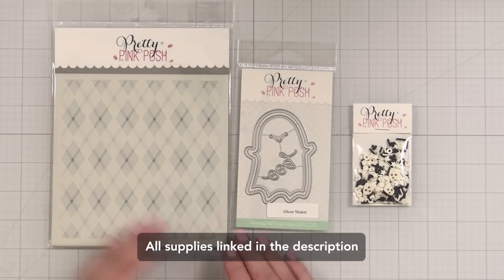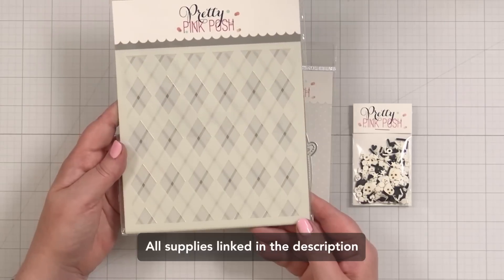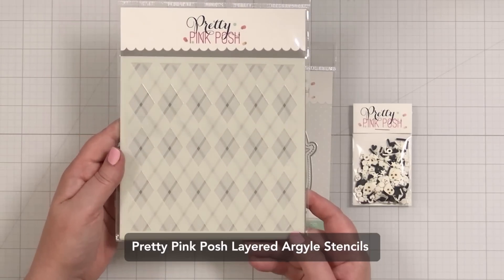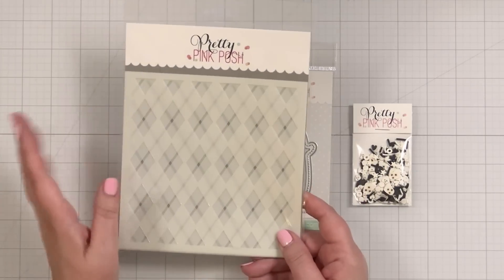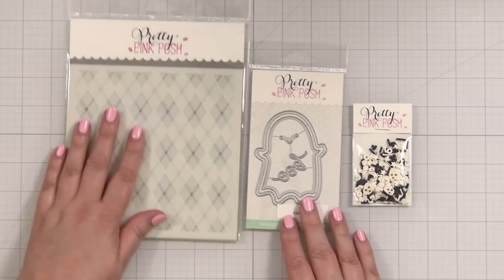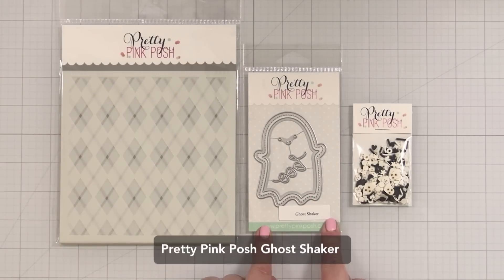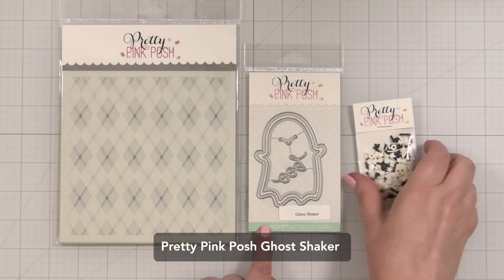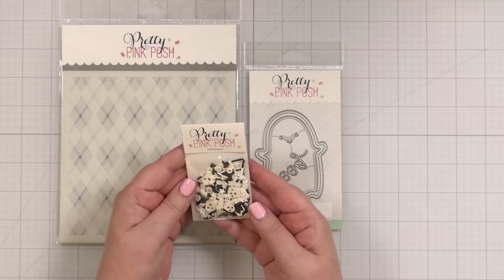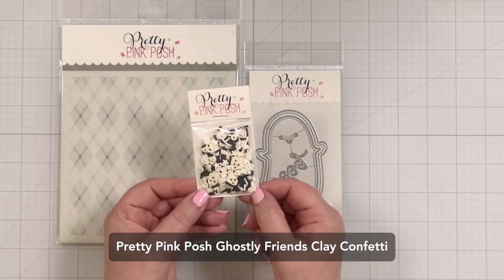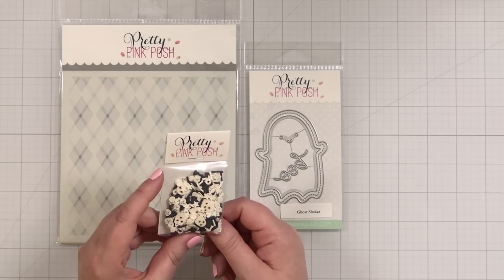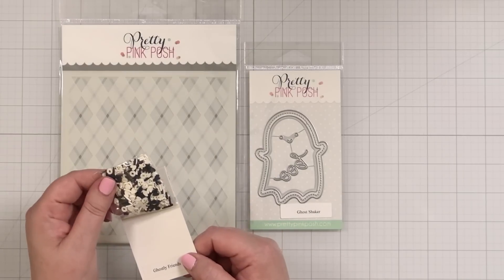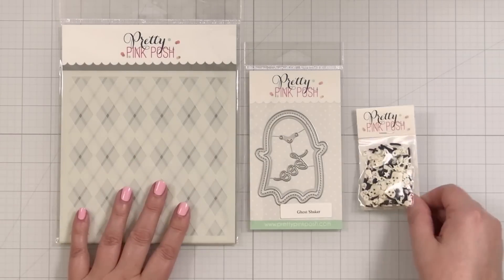Here are the products I'll be creating with today. This is the Layered Argyle Stencil from Pretty Pink Posh, and I think this could be in any season but I'm excited to use it today for a Halloween card. I have the ghost shaker dies and the cutest little fill. We got a little black and white ghost fill. Are there bats in there? There's hearts, ghosts. Oh my gosh, it's just so cute.